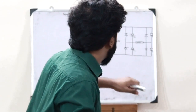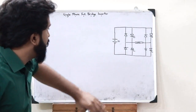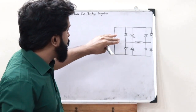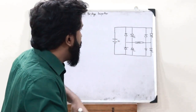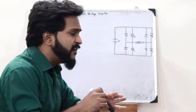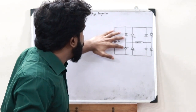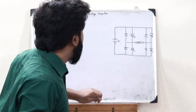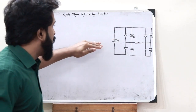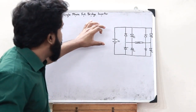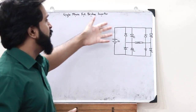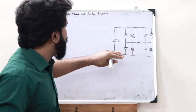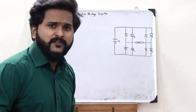This over here is a basic circuit diagram of a single phase full bridge inverter. If you observe carefully, it is more or less the same as a half bridge inverter, but the extra thing we add here is two more diodes and two more SCRs. Rather than splitting the voltage source into two equal halves, we are connecting the entire voltage Vs with this circuit — that is the basic difference between a full bridge inverter and a half bridge inverter.